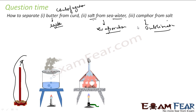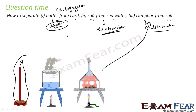When finding which process to use to separate components, first look at their properties and how they differ. For butter and curd, one is lighter and one is heavier, so we use centrifugation. For seawater and salt, one is volatile and one is non-volatile, so we use evaporation. For camphor and salt, one sublimes and one does not, so we use sublimation.